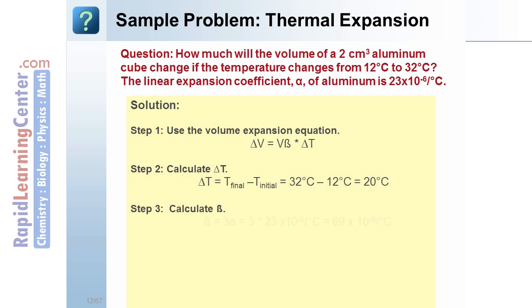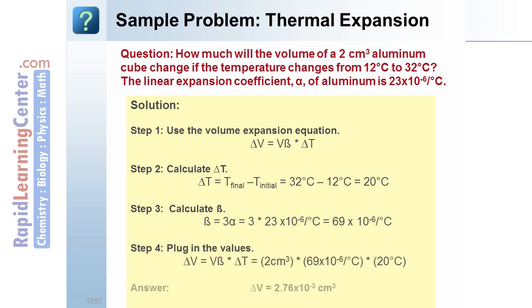Next, we'll need to calculate the volume expansion coefficient, which is 3 times the linear expansion coefficient, which gives us 69 times 10 to the negative 6th per degree Celsius. Finally, plug in the values we have obtained, multiply, and get a change in volume of 2.76 times 10 to the negative 3rd cubic centimeters.